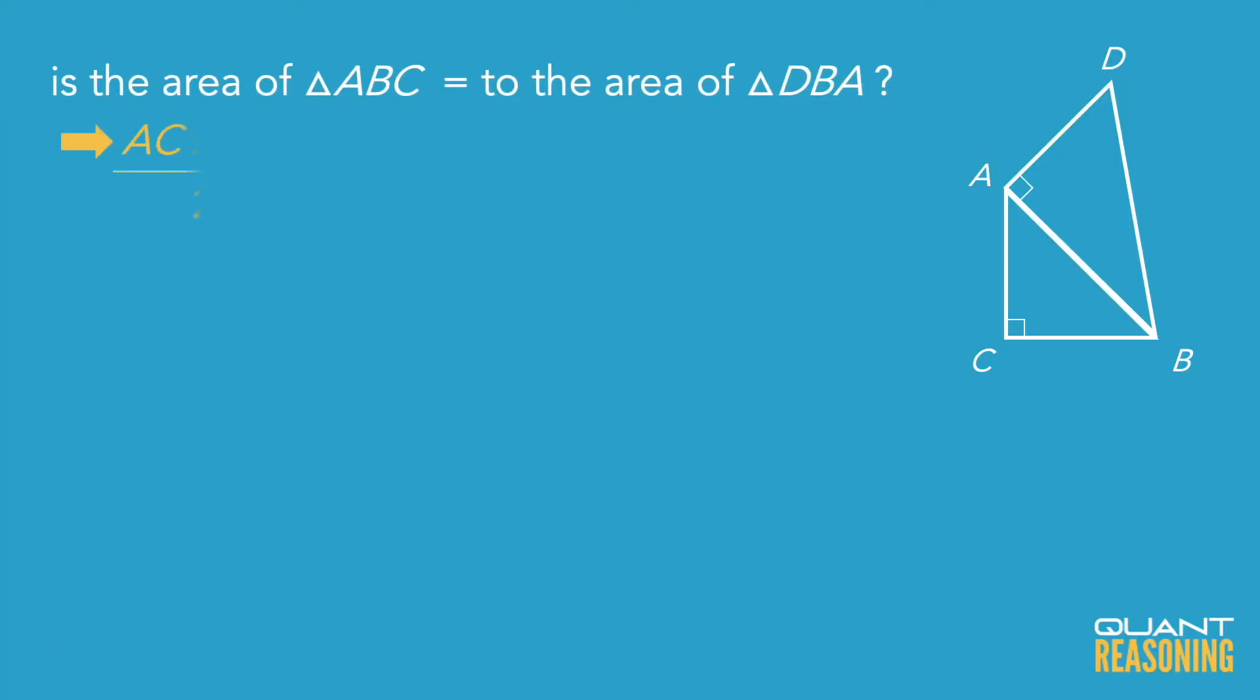So for triangle ABC, the area is half of AC times BC, and for the other triangle ABD, the area is half of AB times AD. And the question is, are those equal? So I'm just going to expand my equation by a factor of 2 to avoid having fractions, and just ask, are these two products equal to one another?